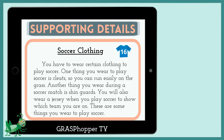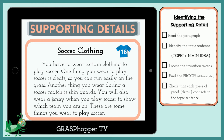We put the steps for finding supporting details onto a checklist. Let's use the checklist to find the supporting details of a new paragraph. First, we read the paragraph: you have to wear certain clothing to play soccer. One thing you wear to play soccer is cleats, so you can run easily on the grass. Another thing you wear during a soccer match is shin guards. You will also wear a jersey when you play soccer to show which team you are on. These are some things you wear to play soccer. Now we identify the topic sentence — here it is: you have to wear certain clothing to play soccer.